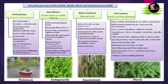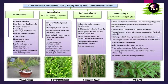The second group is Lycopsida. In these plants, the plant body is clearly differentiated into root, stem, and leaves. They are both homosporous and heterosporous, meaning they contain two kinds of spores. These plants also depend on fungi for their development.